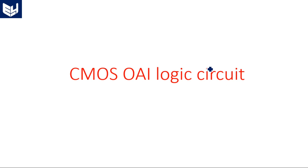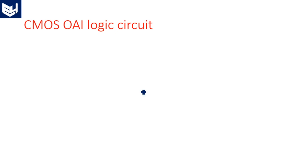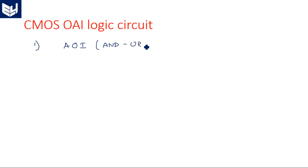In this video I am going to explain the CMOS OR-AND-INVERT logic circuit. In the previous video we started complex logic circuit design with AND-OR-INVERT. There are two different types of complex logic circuits in the design of CMOS structures: one is AND-OR-INVERT (AOI), and the second one is OR-AND-INVERT (OAI).